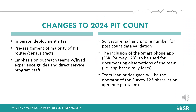We have made changes designed to ensure the safety of all participants in the count. They include in-person deployment sites, the pre-assignment of the majority of PIT routes or census tracks, emphasis on outreach teams with lived experience guides and direct service program staff, surveyor email and phone number for post-count data validation purposes, the inclusion of the smartphone app Survey123 to be used for documenting observations of the team, and the team captain or one designee will be the operator of the Survey123 observation app.